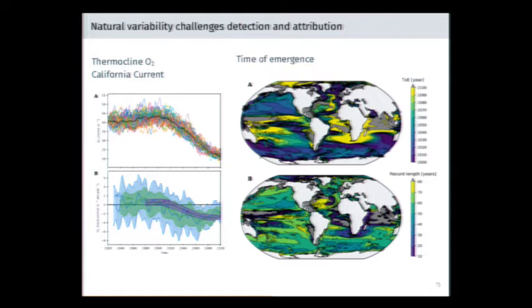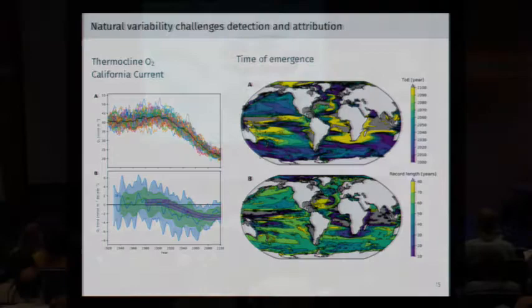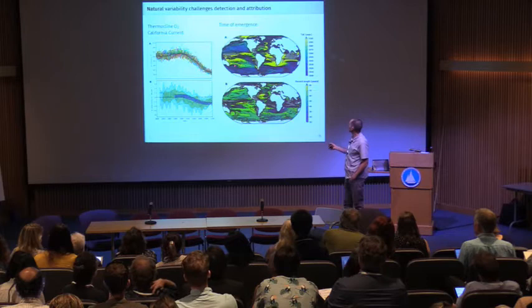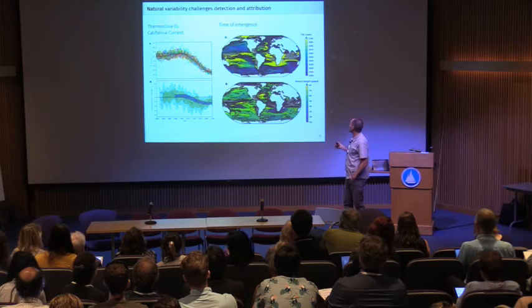For 10-year retrospective trends, we get a wide envelope of variability — there's a lot of fluctuation, and we can't statistically attribute emergence of the signal. With 60-year trends, we can determine a time of emergence, which falls relatively deep into the 2040s to 2050s based on retrospective trends. Doing this globally, we should see very early emergence in the high-latitude Southern Ocean, where the signal in theory should be emerging now.